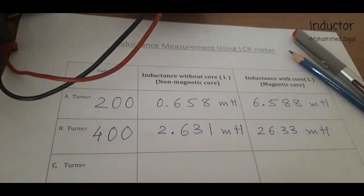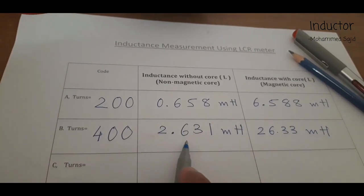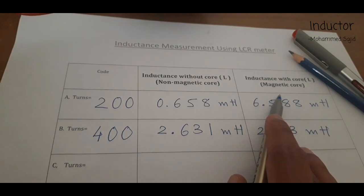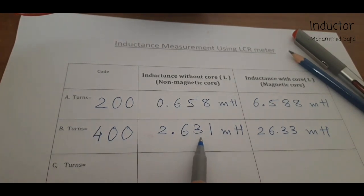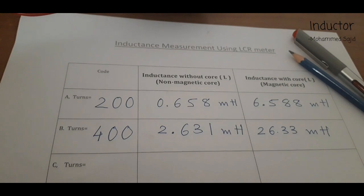In summary: if the number of turns increases — from 200 to 400 — inductance increases. Secondly, if magnetic core material is used, inductance also increases. Without magnetic core material inductance is less; with core material it is higher. This concludes inductance measurement using the LCR meter.